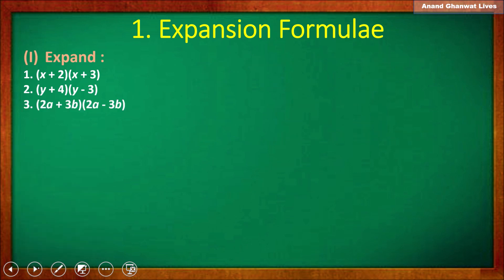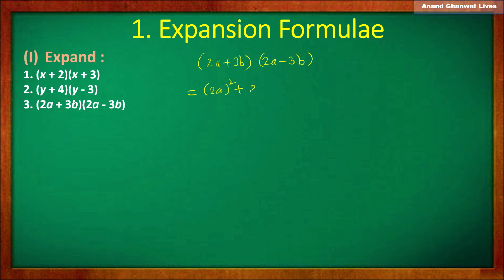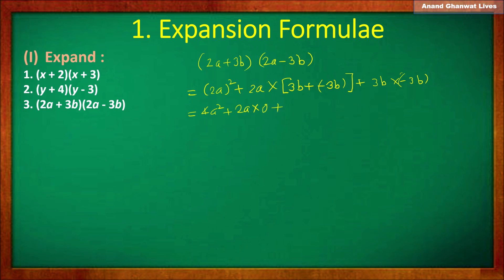Next question: (2a + 3b)(2a - 3b). Using the expansion formula: square of the first term (2a)², plus 2a(3b + (-3b)), plus 3b×(-3b). The middle terms 3b and -3b are opposite terms, so their sum is 0. For 3b×(-3b): 3×3 = 9, b×b = b², and positive×negative = negative, giving -9b². So the answer is 4a² - 9b².